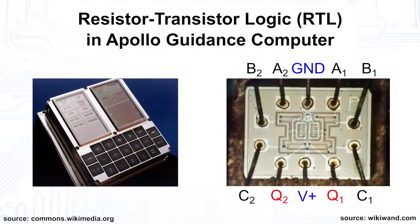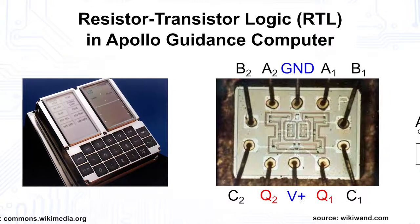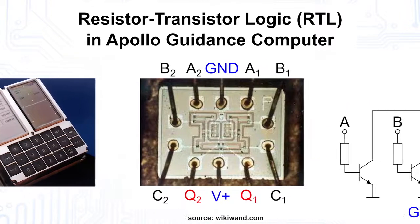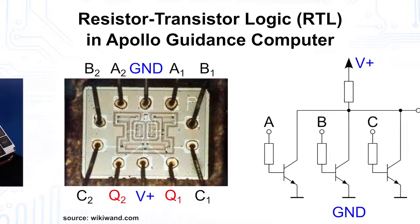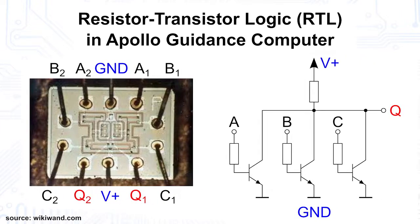Logic circuits similar to this one but with bipolar transistors were used for the moon landing in the Apollo guidance computer in the 1960s. This resistor transistor logic, or RTL for short, had some significant drawbacks.